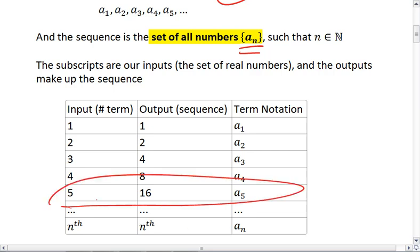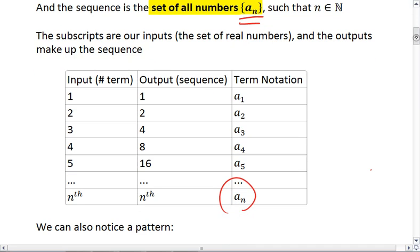Fifth term, a sub 5. The output is 16. And so on and so forth until we get down to the nth term, where our input is n and our output is whatever that nth term is.